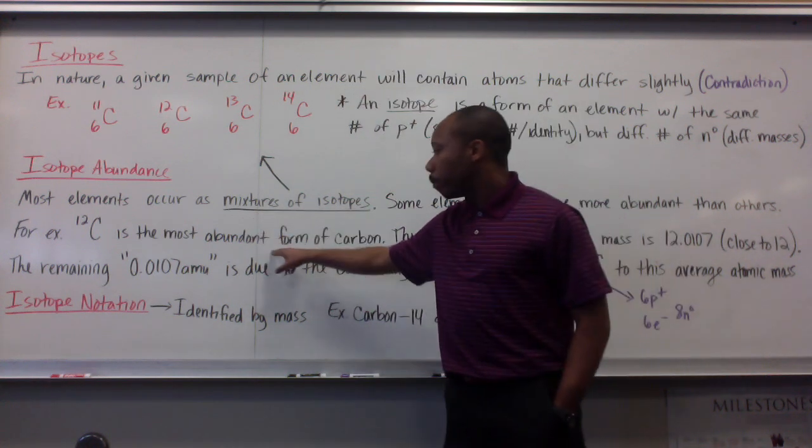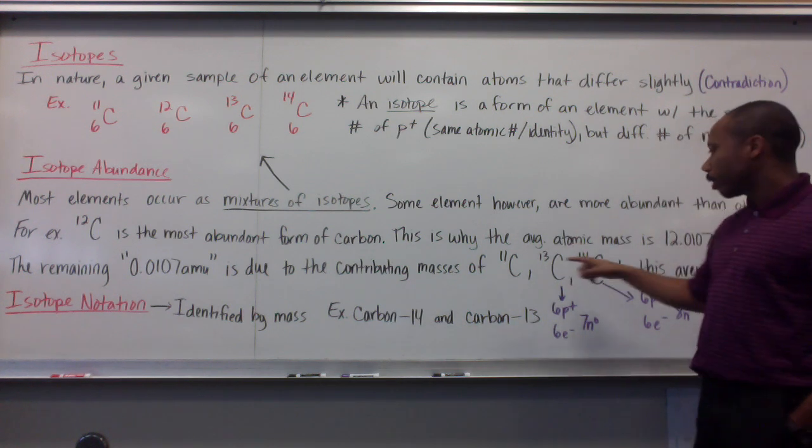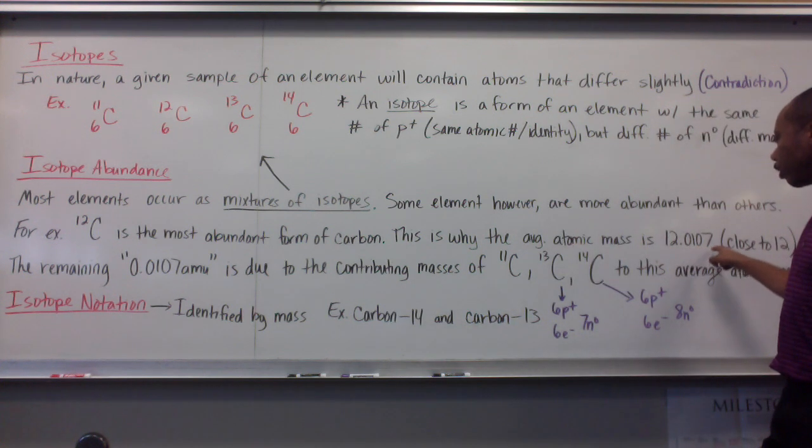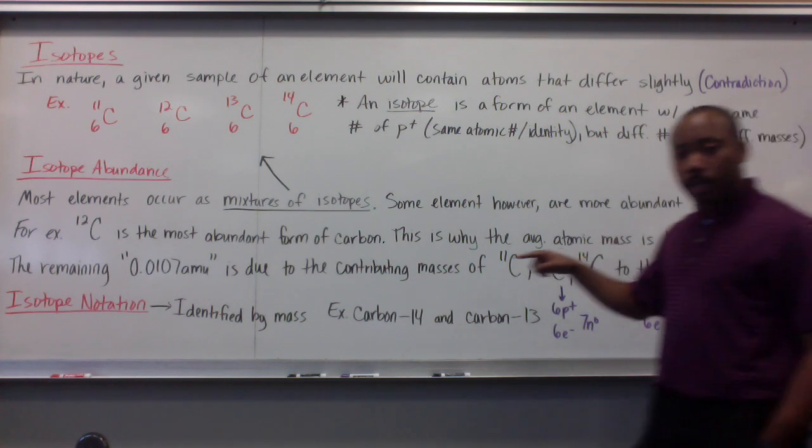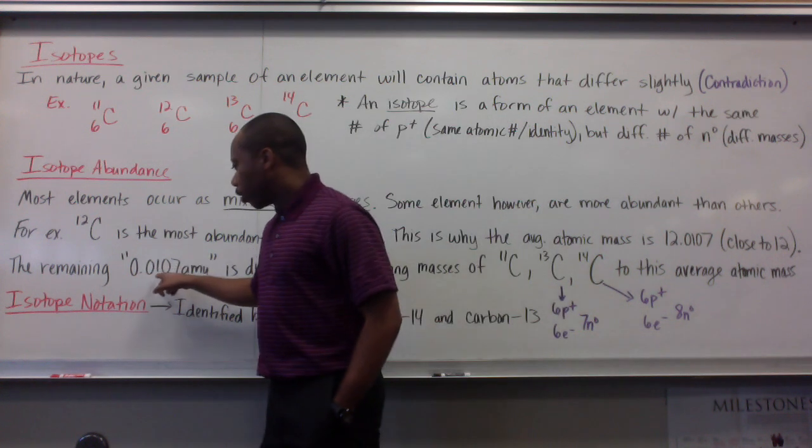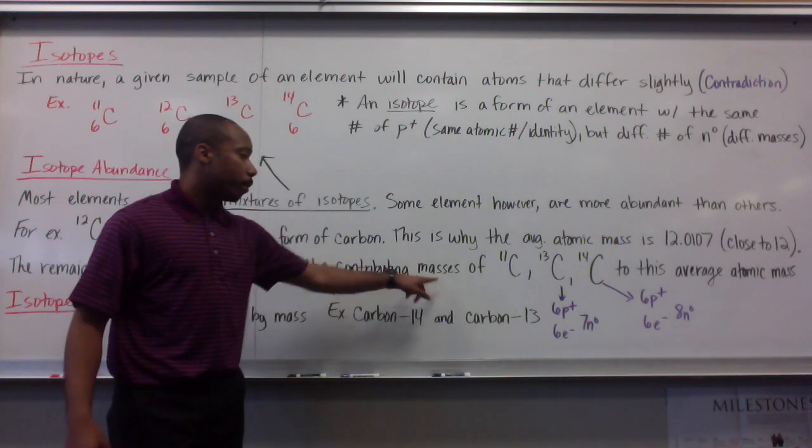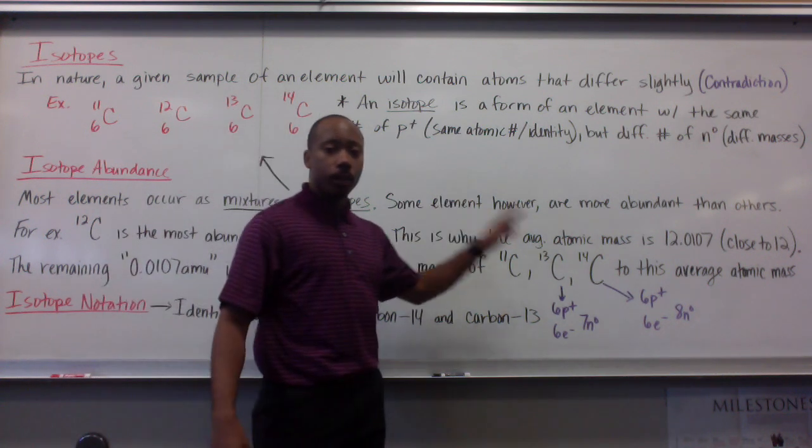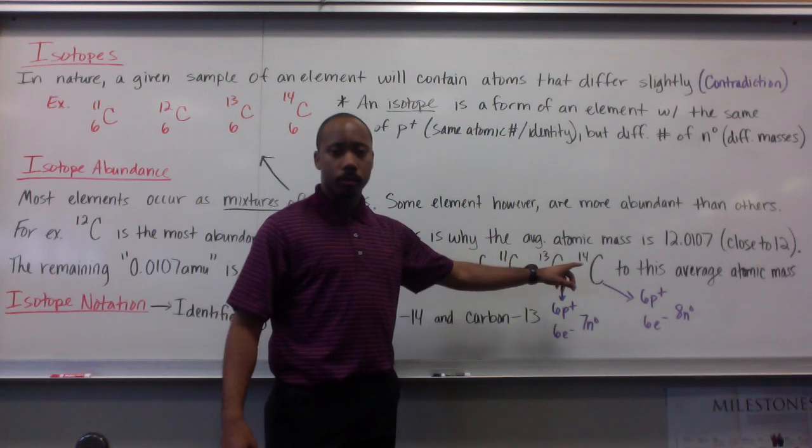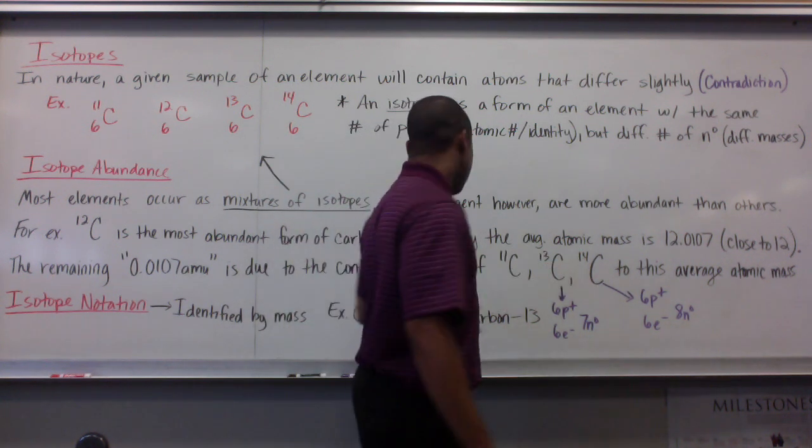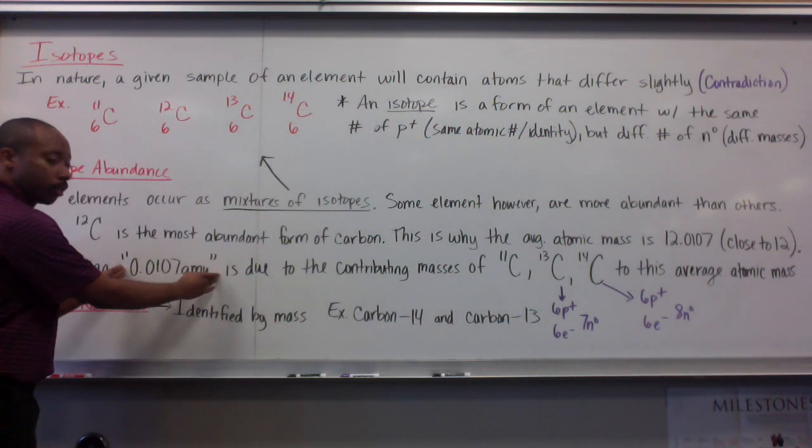So, since carbon 12 is the most abundant form of carbon, this is why the average atomic mass that we saw on the last board is 12.0107. It's close to 12. The remaining 0.0107 AMUs is due to the contributing masses of carbon 11, carbon 13, and 14. So, they attribute their masses to the average, and what they contribute is only this amount.